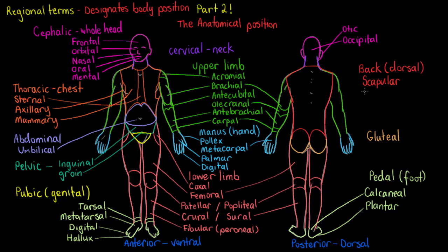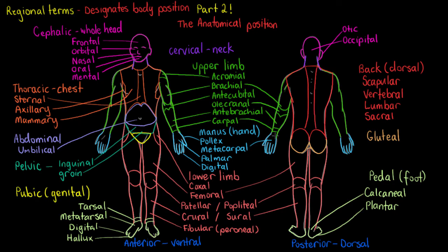Moving on to the last major region of the body — the back — with scapula, vertebral, lumbar, and sacral subdivisions. The regions within the back are quite easy to remember because they just reflect that portion. The scapula region is where the scapula is. The vertebral region follows the spine. The lumbar is the lower portion of the back where we find our lumbar spine, and the sacral is just where we find the sacrum bone.